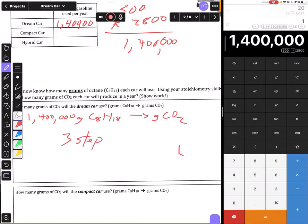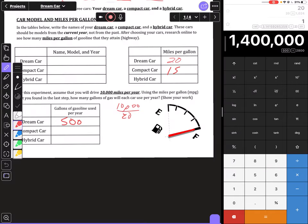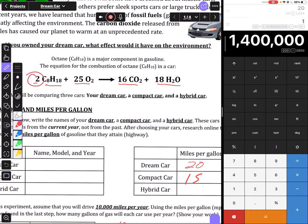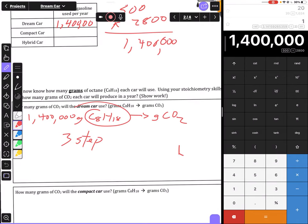First, you're going to convert grams of octane to moles - that's 1,400,000 grams divided by the molar mass of C8H18. That gives me moles. My next step is to go from moles of C8H18 to moles of CO2 using my balanced equation. Going back to my balanced equation, it tells me that for every 2 moles of C8H18 that reacts, I get 16 moles of CO2. I'm going to use those numbers to help me convert from moles of C8H18 to moles of CO2.